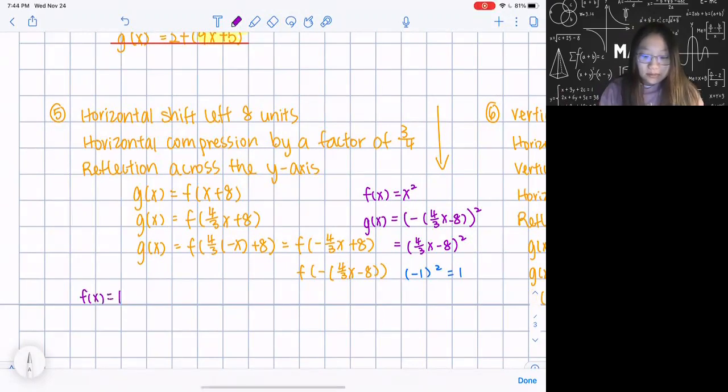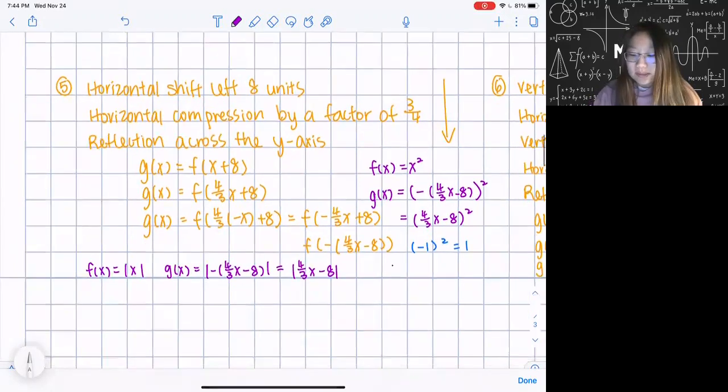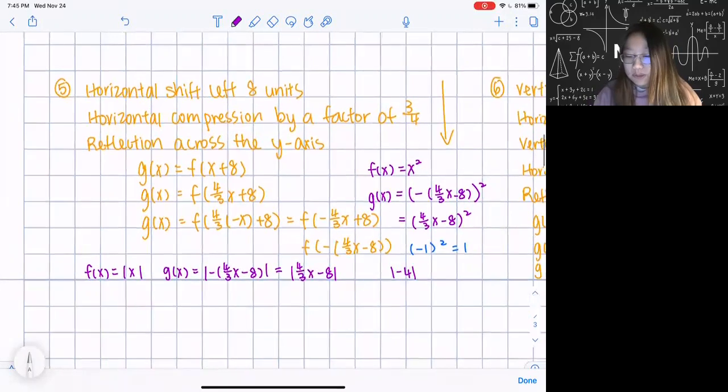But let's look at absolute value function in this case. So f(x) equal to absolute value of x. So now I'm replacing that x with the same inside |-4/3 x - 8|, right? So this is just going to be absolute value of |4/3 x - 8| because negative inside the absolute value function basically doesn't have an effect. Think about this: negative 4 absolute value equal to 4 and 4 absolute value also equal to 4. So the negative sign doesn't have an effect. So I can just disregard it.